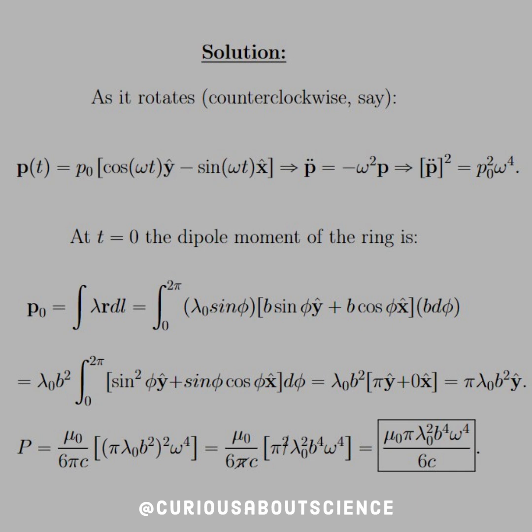We have to be careful now because we have to treat each component as its own integral. Just make sure you keep the x and y together. When we distribute the sin φ from the λ, we get ŷ as sine squared and x̂ as sine cosine. We know that in our integrals, sine cosine leads to 0, so that's where the 0x̂ comes from.